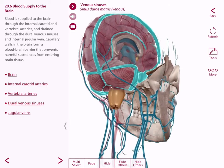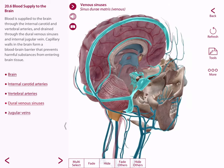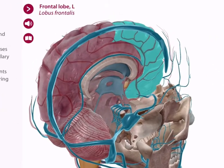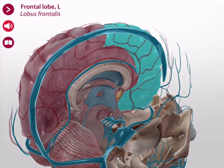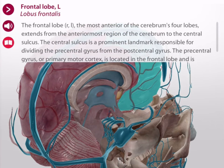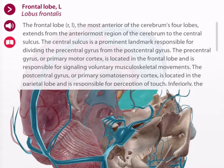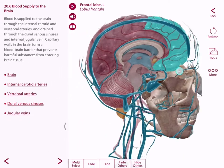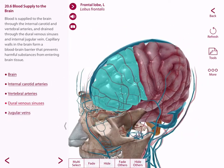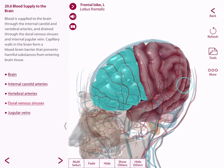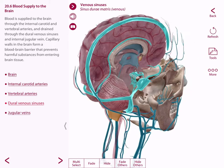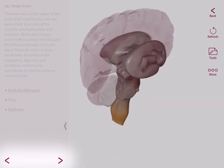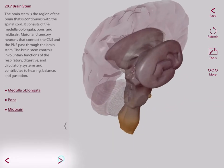Note that you're in a live 3D model so every structure you see is selectable. You get the structure name, the speaker icon gives you the pronunciation, and the book icon gives you a definition. You can rotate and zoom into the models and fade, hide, and bring the structures back again. To get to the next lesson, just tap the arrow or swipe.